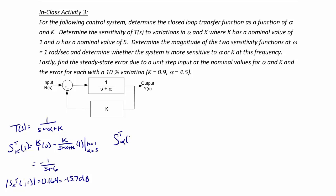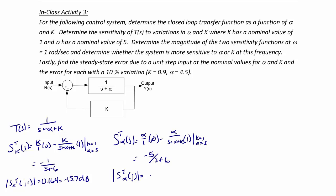The sensitivity function with respect to alpha is alpha over 1 times 0 minus alpha over (S plus alpha plus k) times 1, evaluated at k equal to 1 and alpha equal to 5, giving negative 5 over (S plus alpha plus k). The magnitude at 1 radian per second is equal to 0.822, or negative 1.7 decibels. This shows that the closed loop transfer function is more sensitive to variations in alpha.